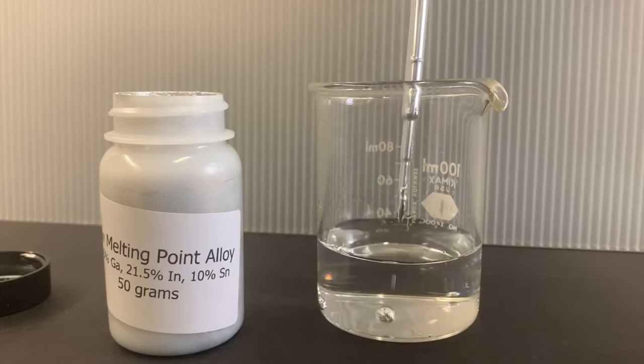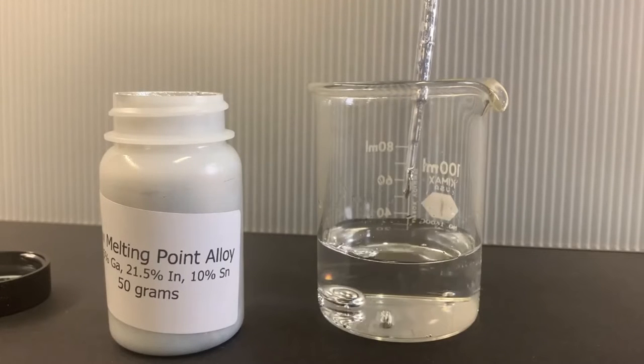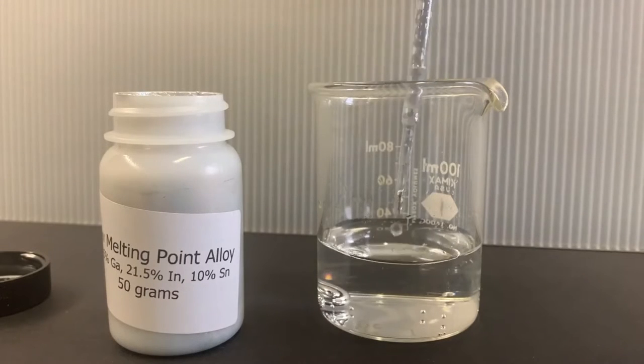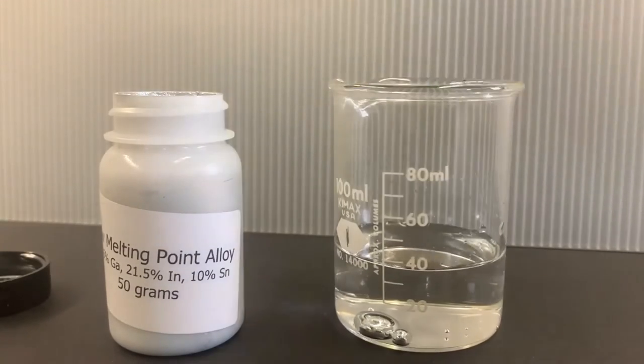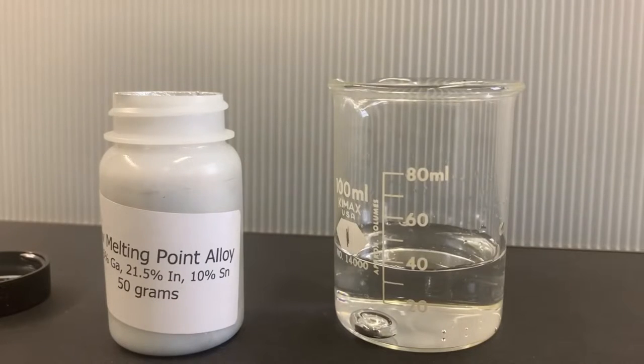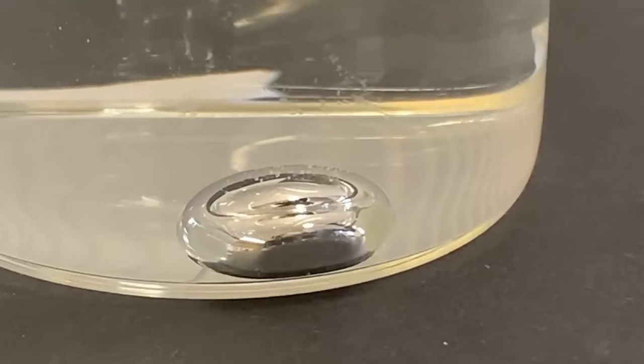I'm going to try to use gallinstan in place of mercury in the classic mercury-beating-heart experiment, in which a drop of liquid mercury is made to pulse, just like a beating heart. Let me show you how this experiment works.